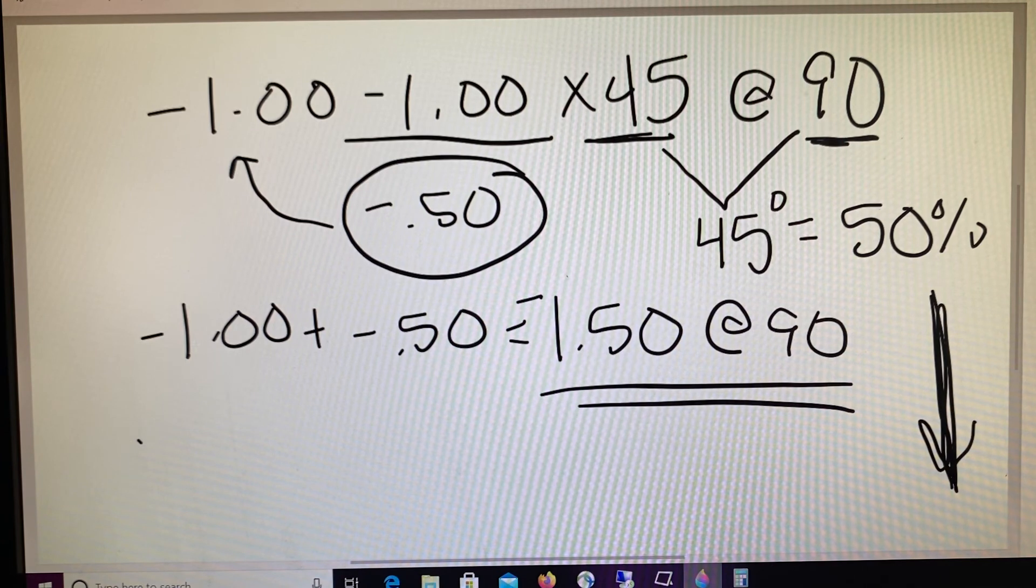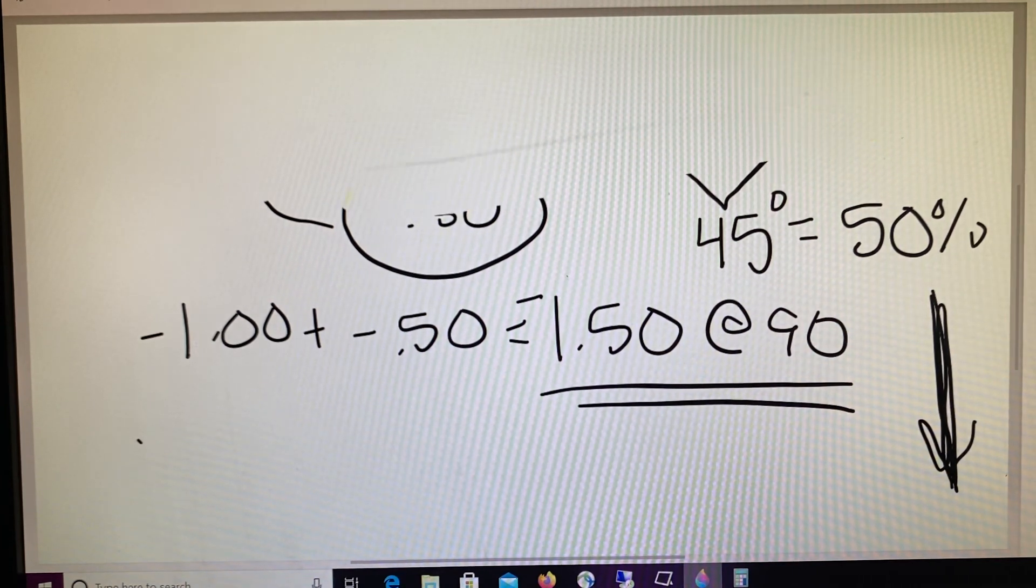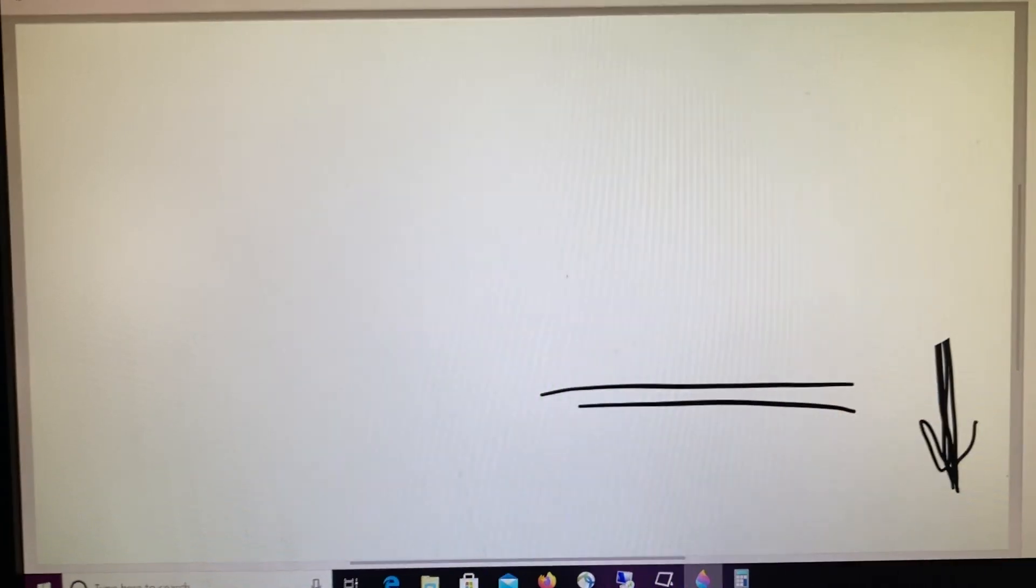So remember the steps for power in a requested meridian always pertain to first determining how far away your given axis is from your requested axis and then applying the appropriate percentage of the cylinder. Please give me a call if you have any questions about requested meridian.